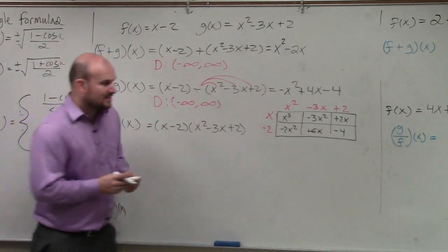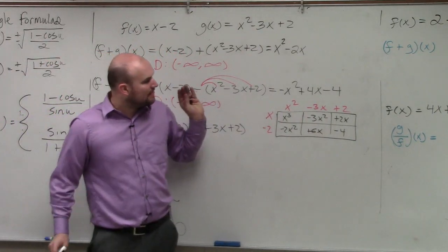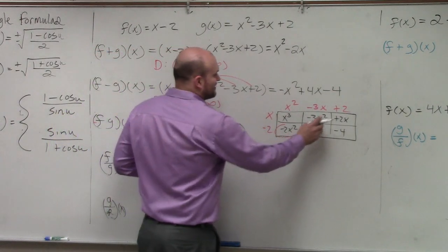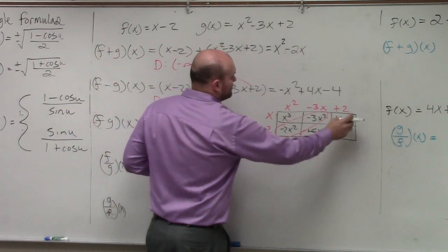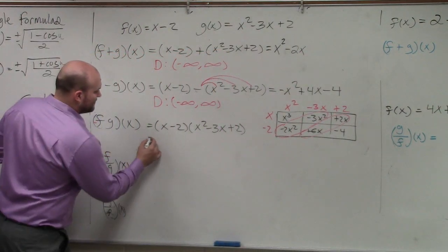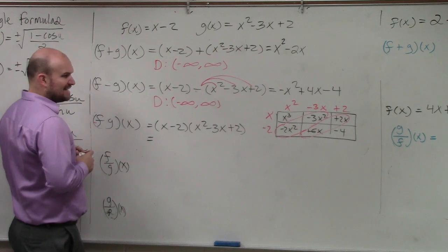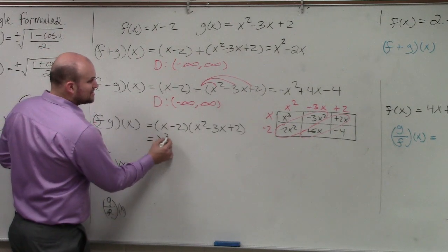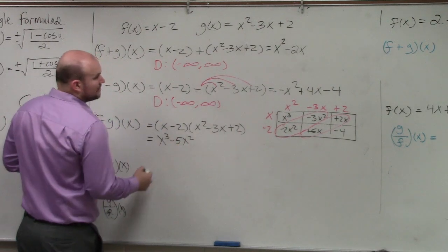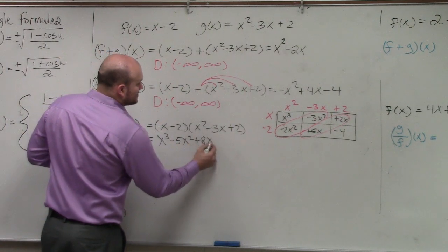x cubed minus 3x squared plus 2x minus 2x squared plus 6x minus 4. And what's also nice about the box method is as long as you have your polynomials in descending order, you have like terms on the diagonal. So it's really easy to combine like terms because they're connected on the diagonal. So therefore, my answer here is going to be x cubed minus 5x squared plus 8x minus 4.